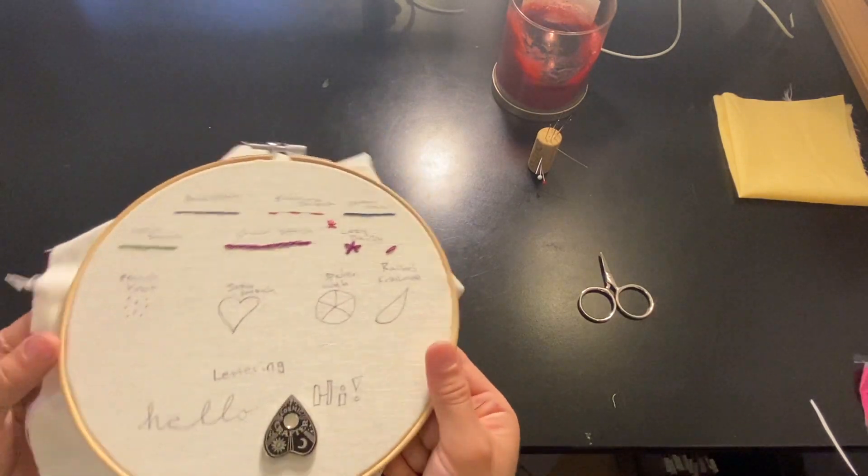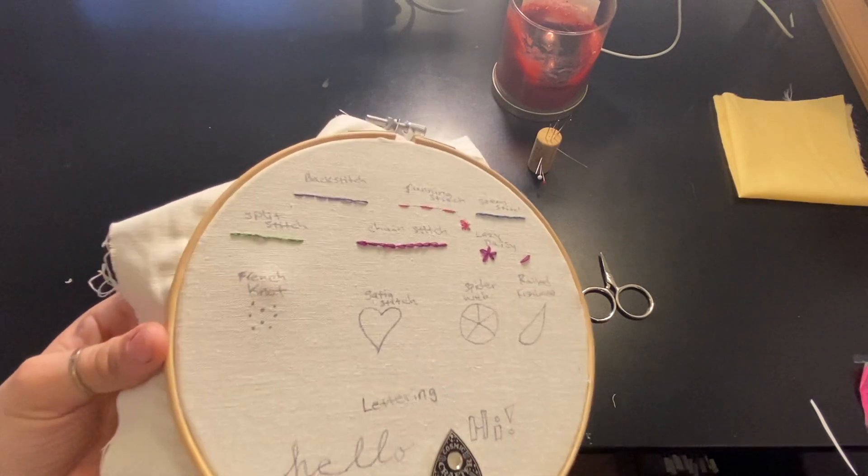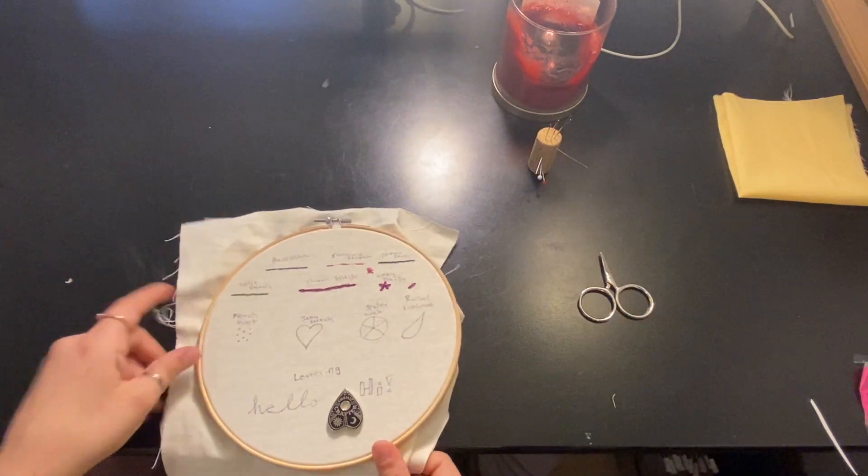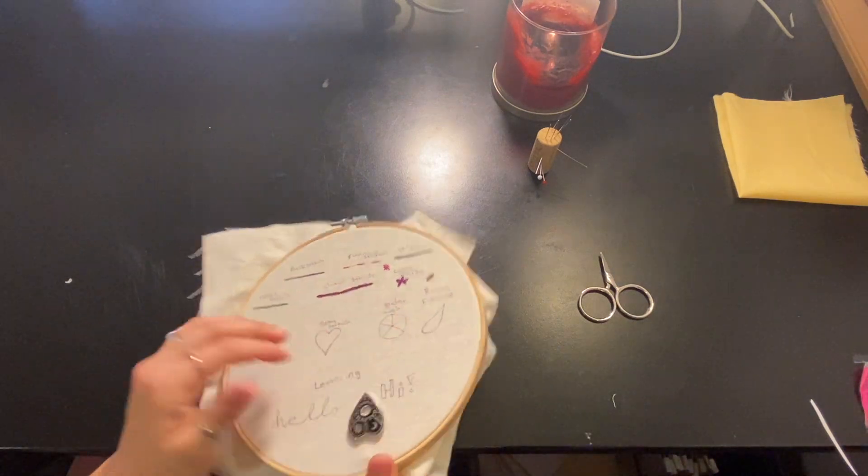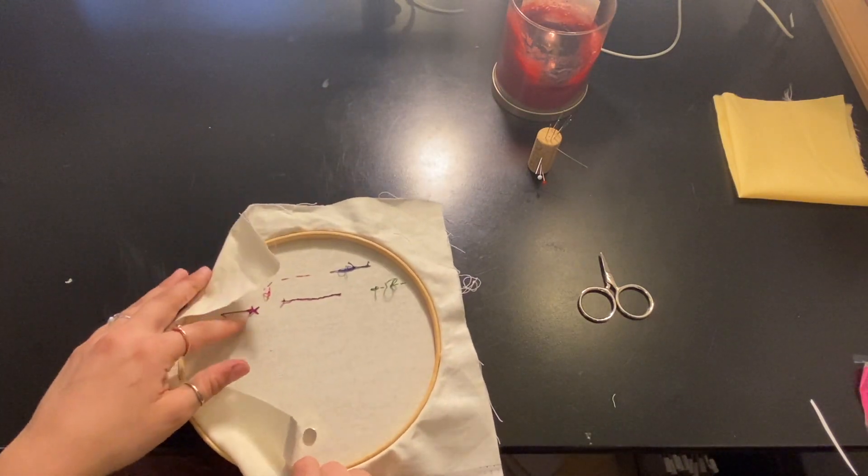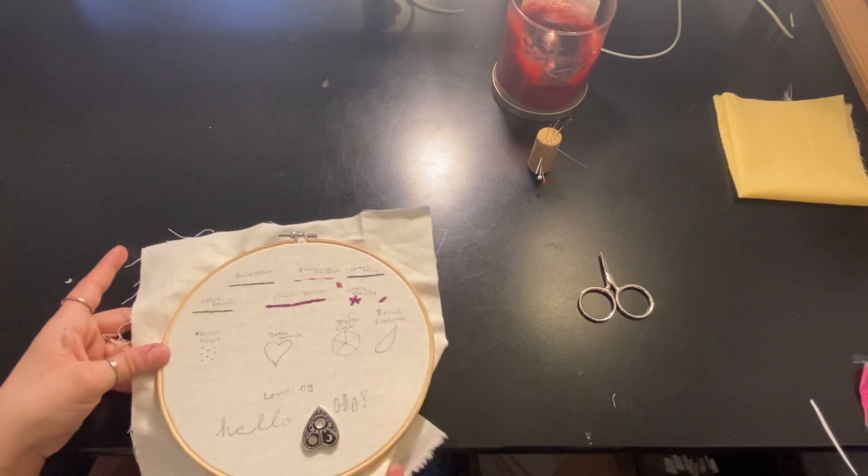All right y'all, welcome back. We are continuing on with this little sampler, and next up we have got the French knot. If you've watched my other videos, a French knot is usually how I like to finish off any of my stitches, but in embroidery you use it for decorations.